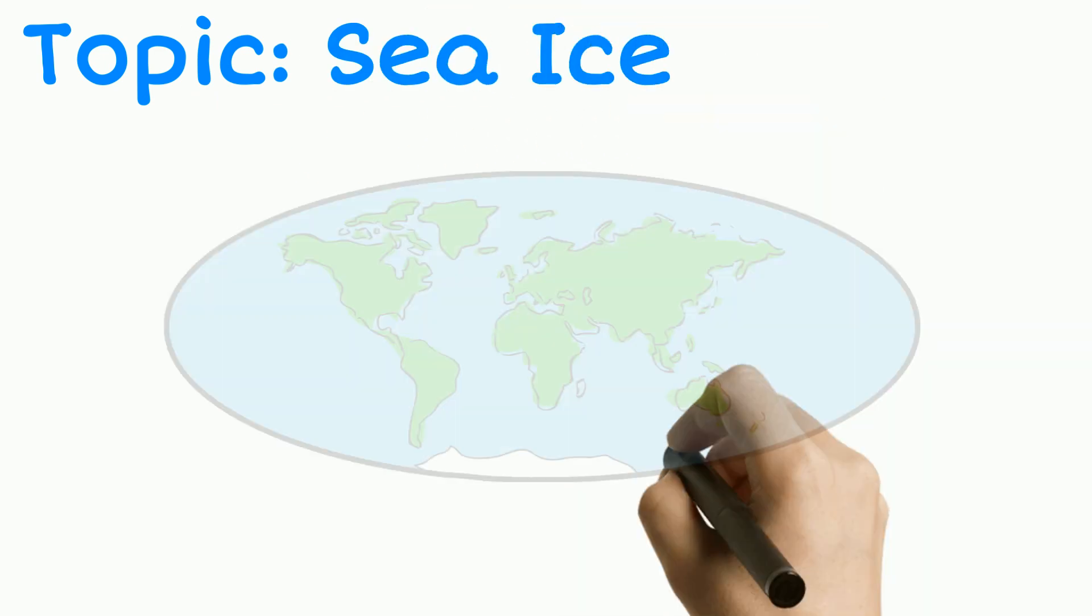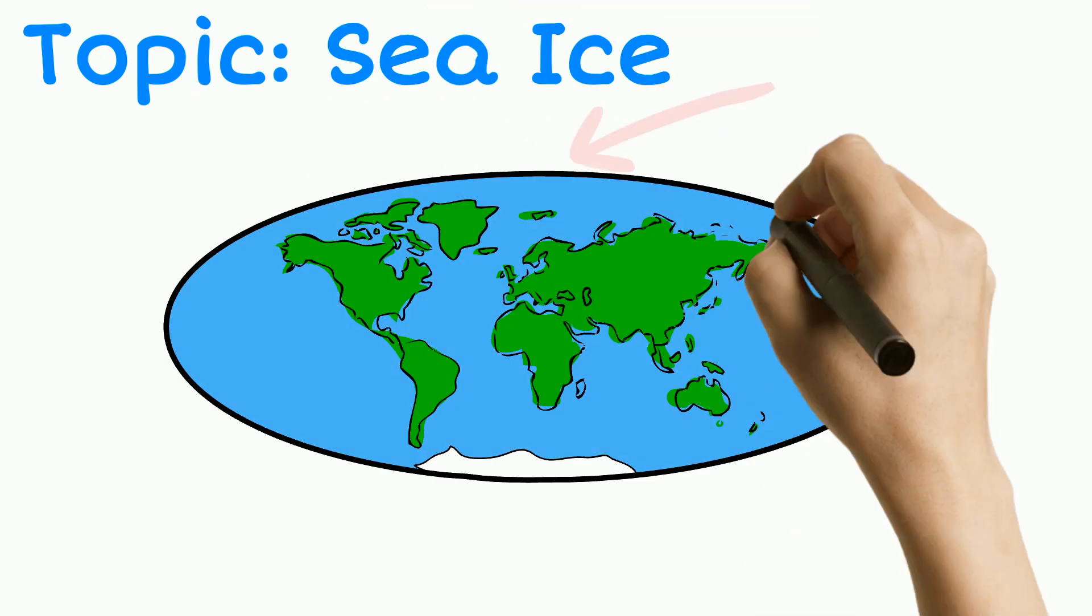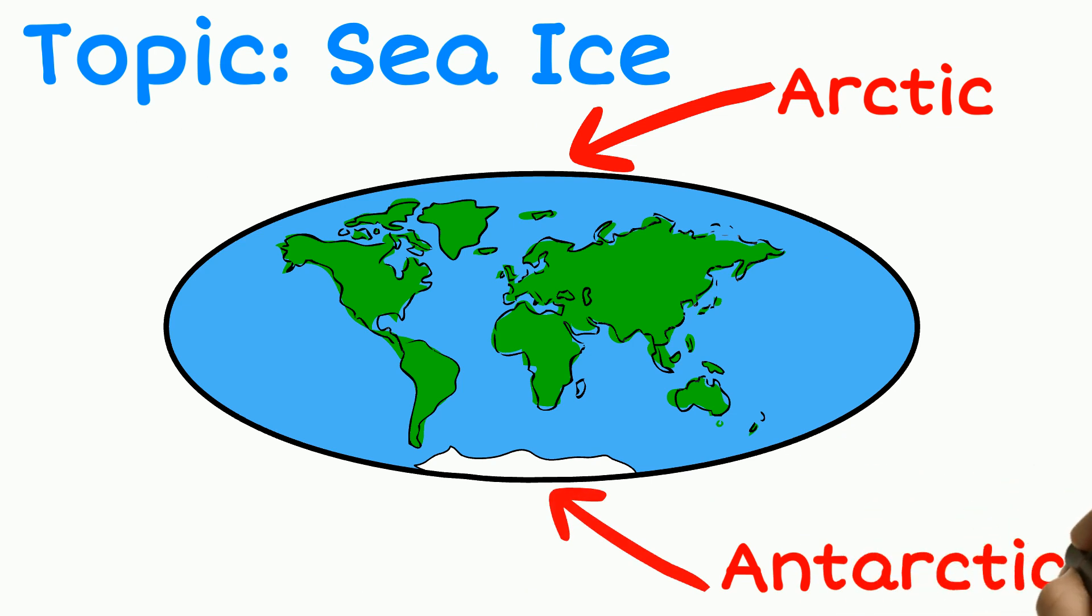So this topic we're going to explore is about sea ice and that can be found in two areas, the Arctic at the top of the world and the Antarctic at the bottom.